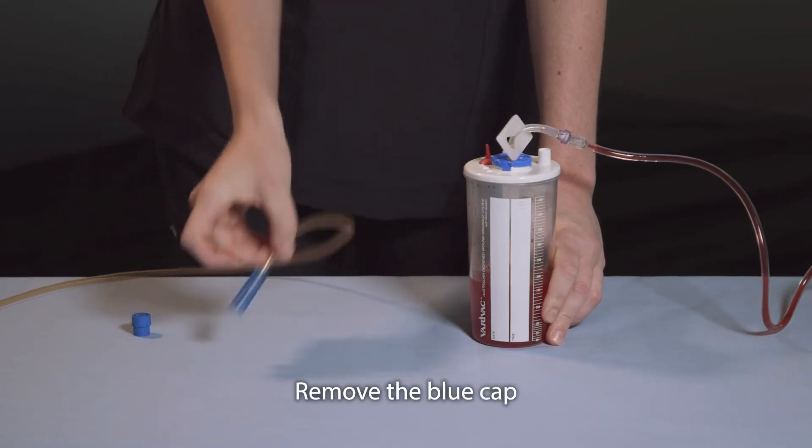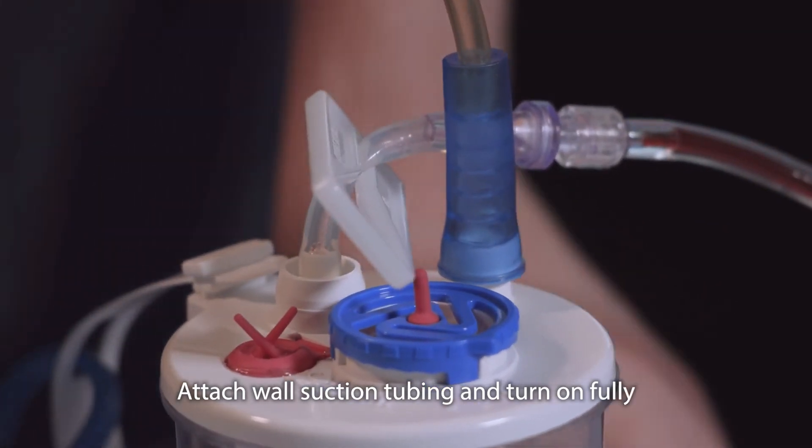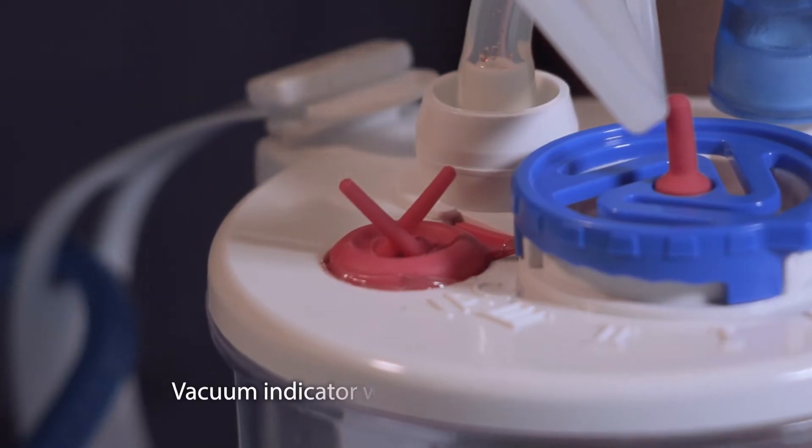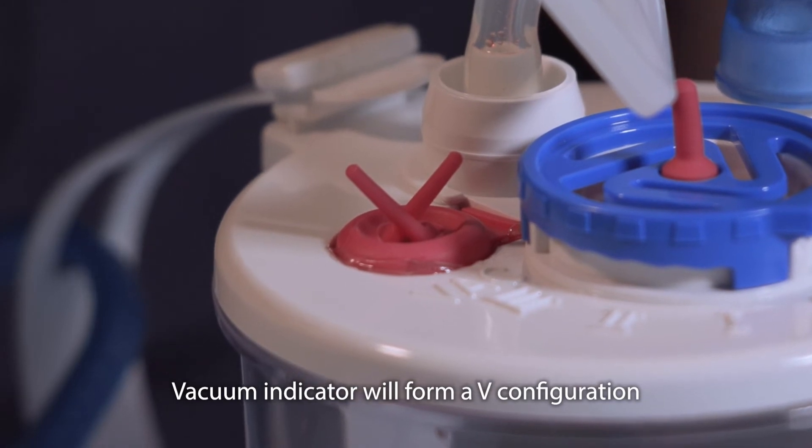Place the wall suction on this port, turning wall suction on fully for a period of 5 to 10 seconds. You will notice the vacuum indicator on top of the canister will move into a sharp V configuration as it is sucked down into the canister.